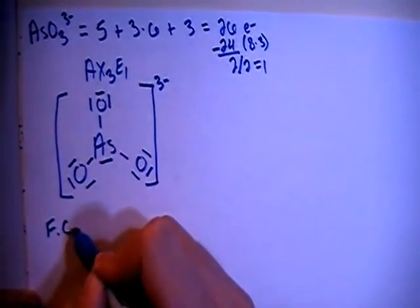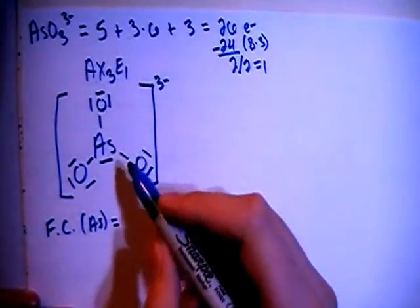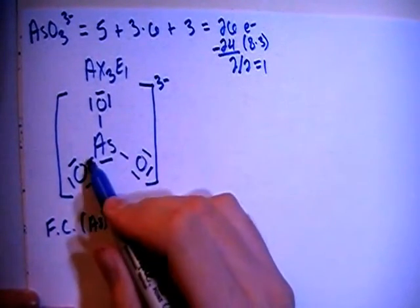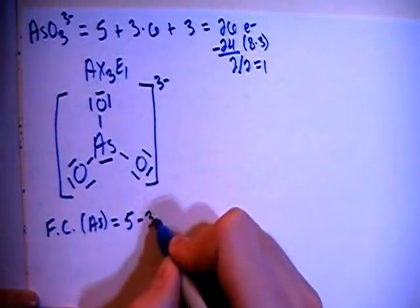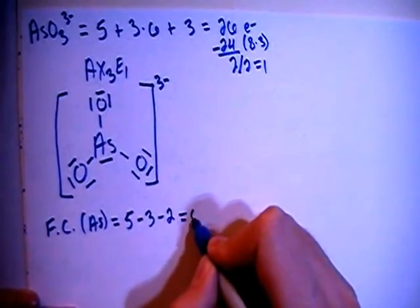The formal charge on the arsenic is going to be equal to the 5 valence electrons brought in, minus 1, 2, 3 bonds, minus 1, 2 non-bonding electrons for a formal charge of 0.